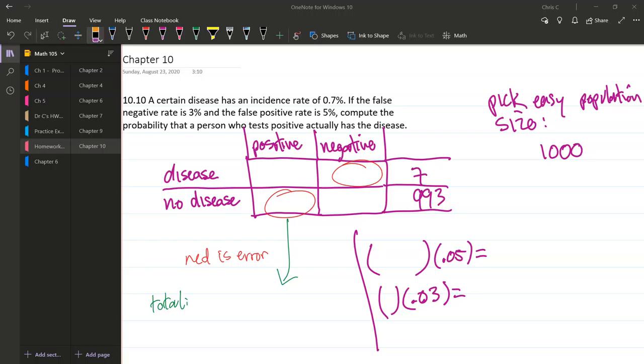We're looking at number 10 in chapter 10. A certain disease has an incident rate of 0.7%, and we're going to start right there.